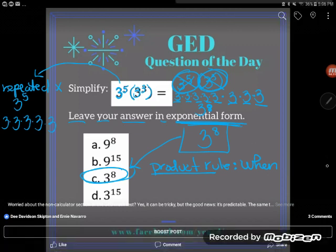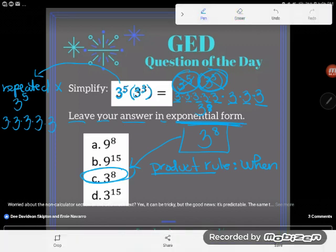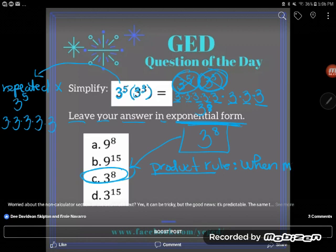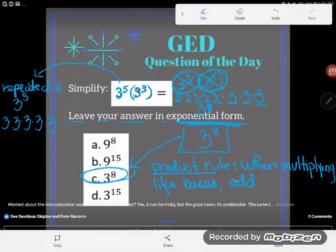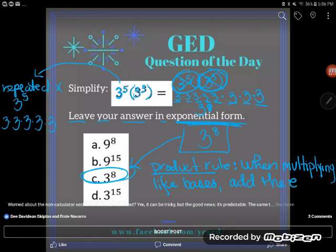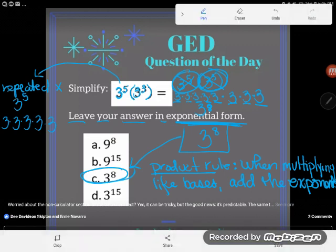But the product rule states that when multiplying like bases, what actually happened? I added, ended up adding the exponents. I already had five threes multiplying and then another three threes started multiplying with it. And so I was just totaling up. That was a total now of eight threes multiplying, or three to the eighth power.